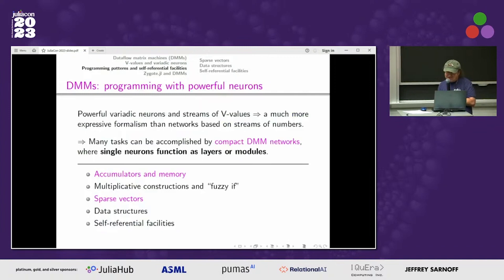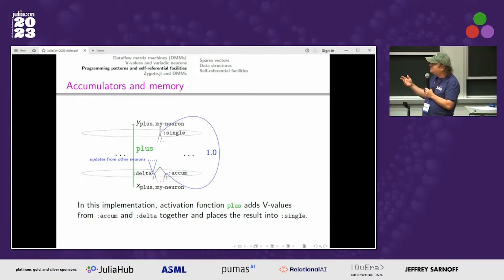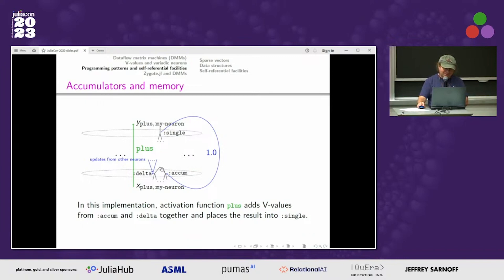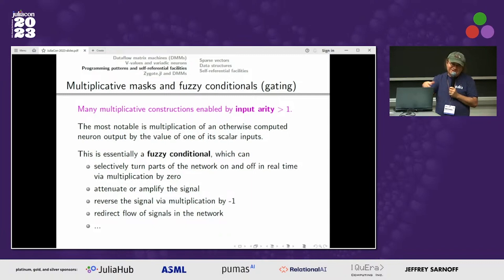You can program with this; there are a number of good constructions which help. An important one is the accumulator, which implements memory in a neural machine: you take a neuron, connect the output back to one of its arguments with weight one — this ensures what gets there stays there — and take updates on the other input. That's super important; you use it all the time everywhere. Then, because you have more than one argument, it's easy to implement a multiplicative construction: one linear combination gives you a multiplier, and another gives you what you want to multiply, and you get the product.